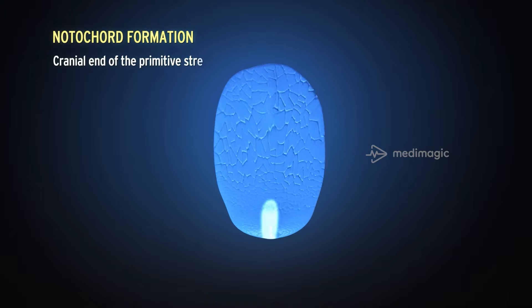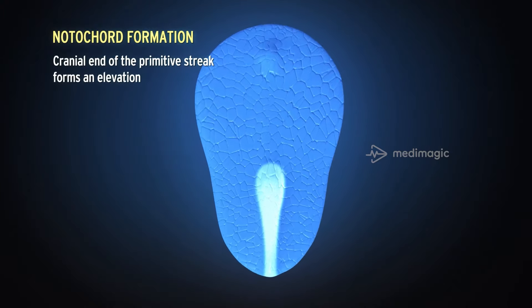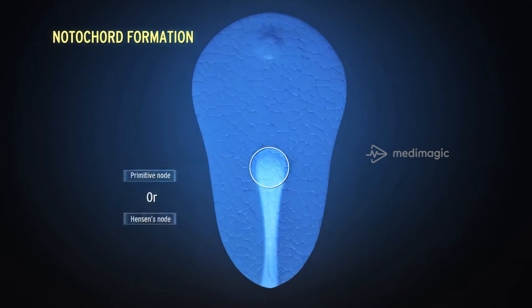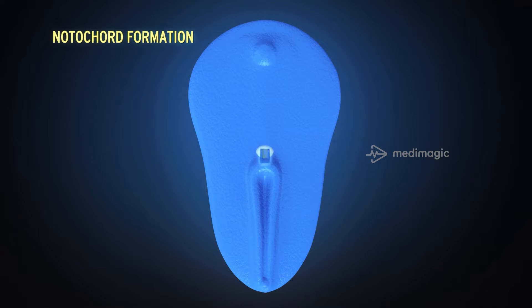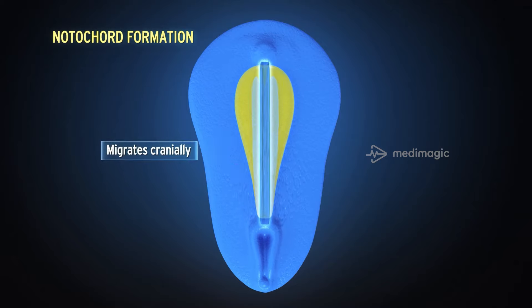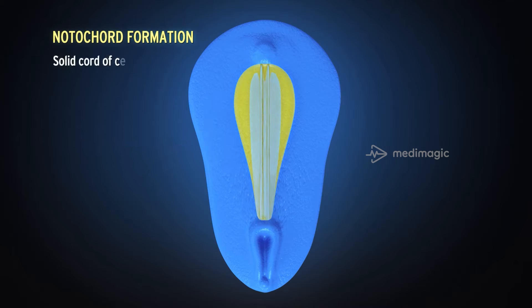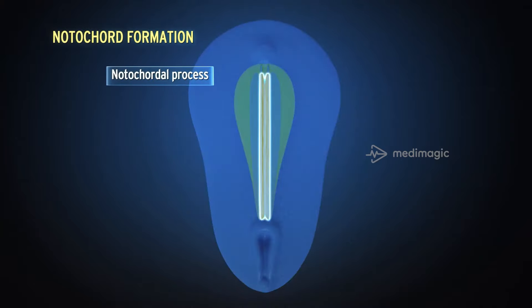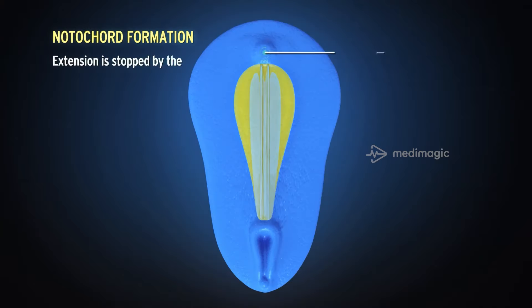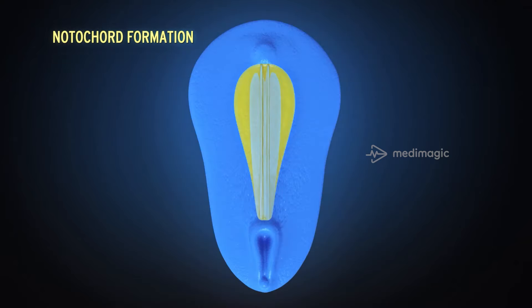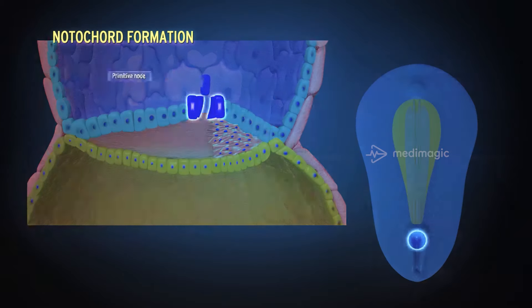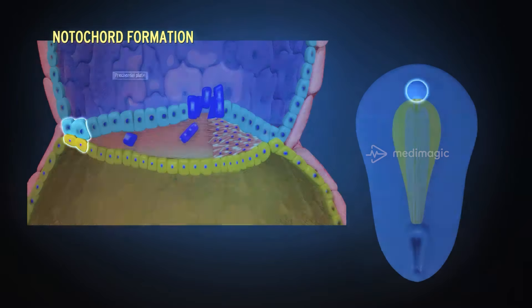The cranial end of the primitive streak forms an elevation called the primitive node, or Hanson's node. Soon a depression appears in the primitive node known as the primitive pit. These cells from the primitive pit invaginate between the ectoderm and endoderm, migrating cranially to form a solid chord of cells in the median plane known as the notochordal process. This extension is stopped by the pre-cordal plate — a small circular area of columnar endodermal cells where ectoderm and endoderm are fused together. The cellular chord extending between the primitive node and the pre-cordal plate is known as the notochordal process.